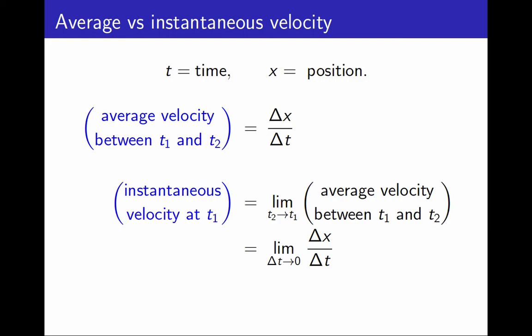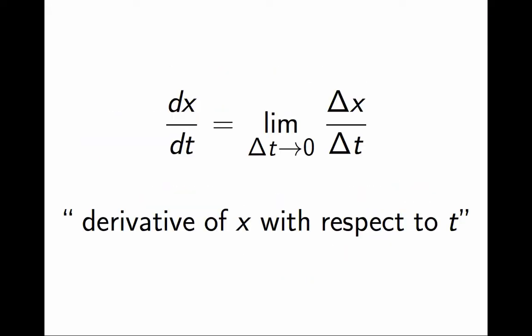We often denote this as dx over dt. But careful! This notation does not mean that I am dividing a number dx by a number dt. dx and dt are not numbers. Rather, the notation just means what I wrote. I divided Δx over Δt, and then I took a limit. When we write it this way, we call it the derivative of x with respect to t.